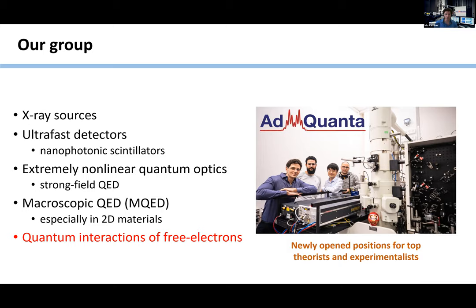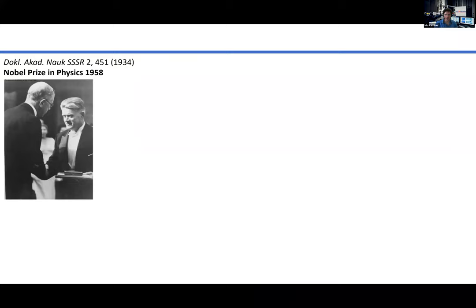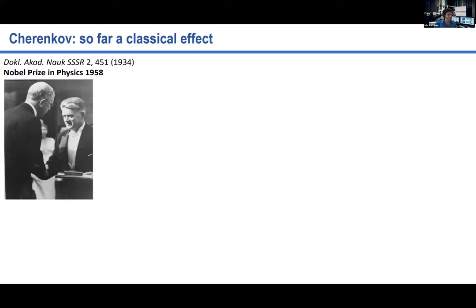Before going all the way there, I want to start with a simple picture. I wonder whether anyone here can recognize the people in this photo. One of them is pretty easy to recognize — that's the left person, probably the King of Sweden, awarding the Nobel Prize. The figure on the right is getting the Nobel Prize in physics for 1958. This is Cherenkov, who made his discovery in his PhD in 1934, and after whom we now call the Cherenkov effect.